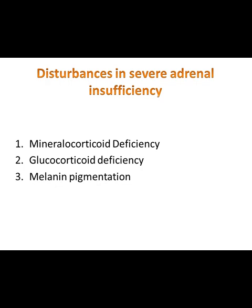What are the different disturbances which will result if there is severe adrenal insufficiency? Three types of problems may result: mineralocorticoid deficiency, glucocorticoid deficiency, and melanin pigmentation.